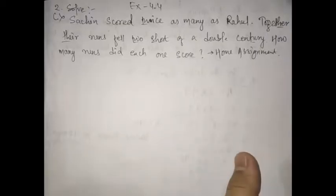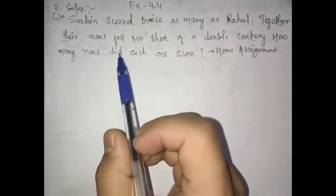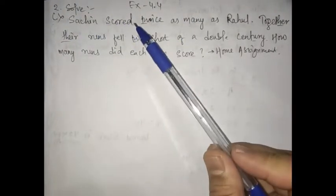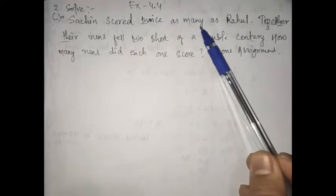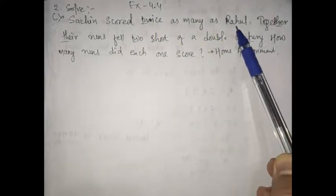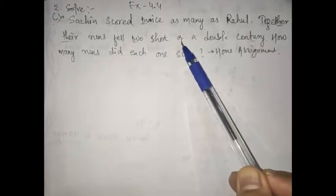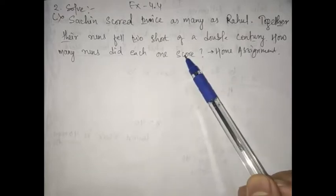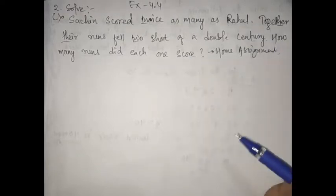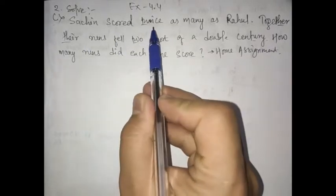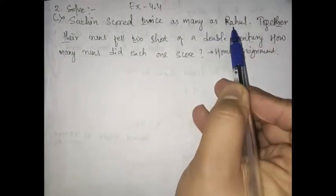Students, here we have the home assignment 2C from exercise 4.4. The question is: Sachin scored twice as many runs as Rahul. Together, their runs fell too short of a double century. How many runs did each one score? That you have to find.